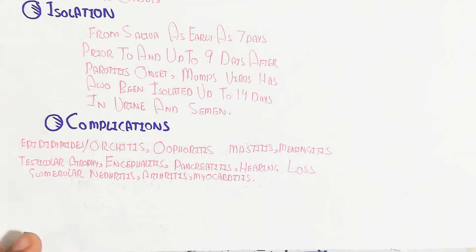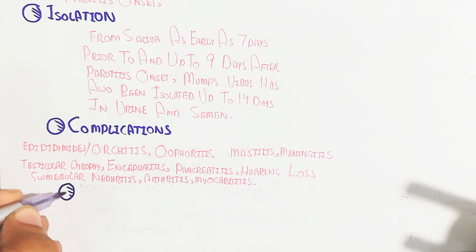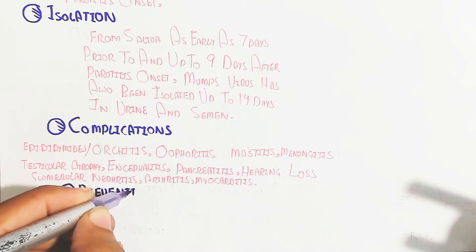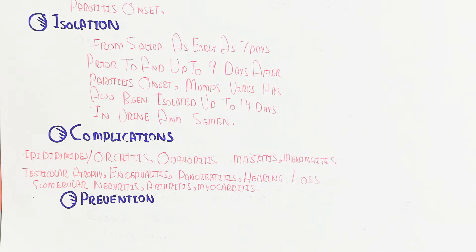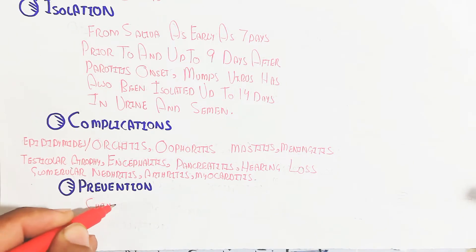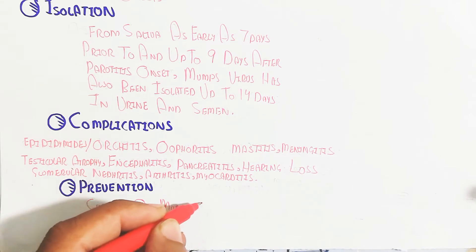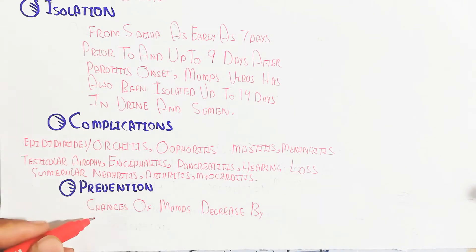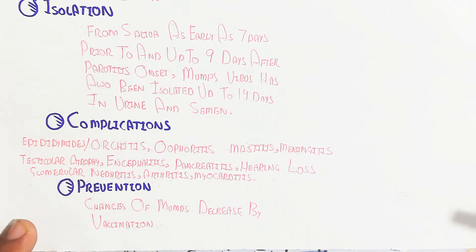For prevention, let's begin to understand. The chances of mumps decrease by vaccination. Early vaccination will prevent 90% of mumps viral infection through vaccination.